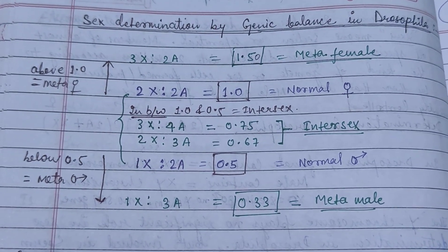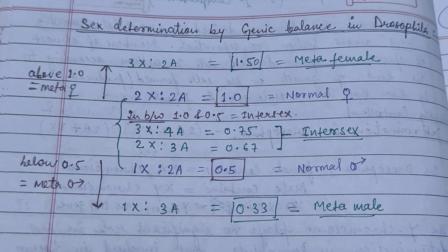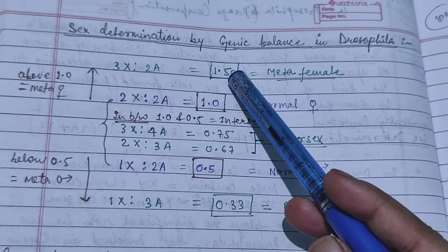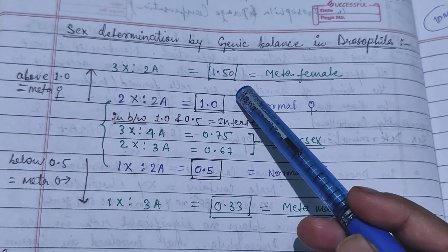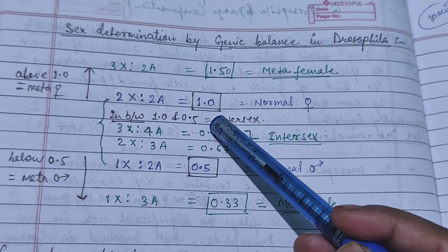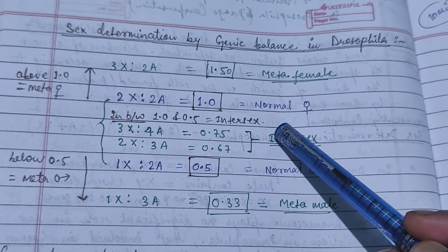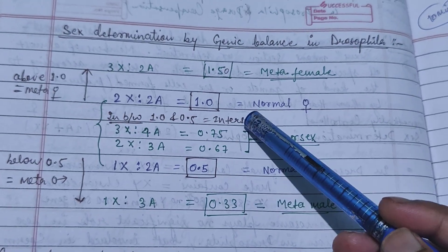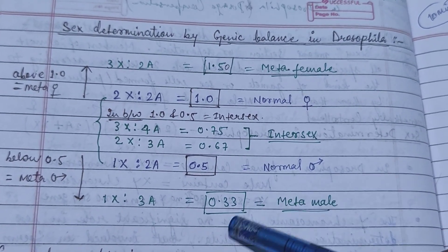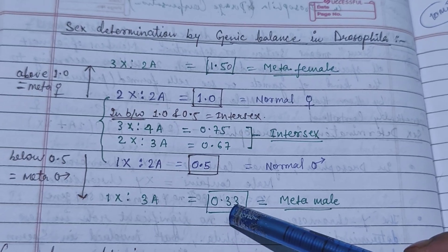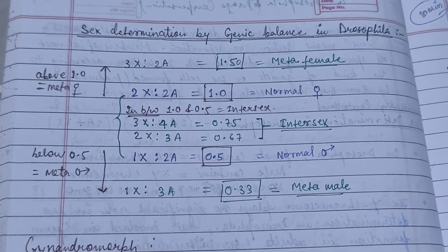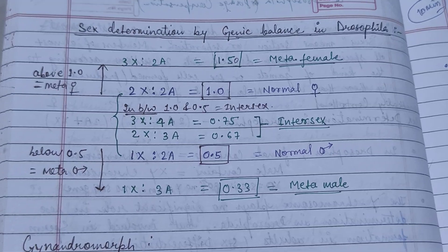If the X:A ratio is 1.5, that is a metafemale. If the ratio is 1, it is a normal female. In between 1 and 0.5, it is called an intersex. If it is 0.33, that is a metamale. So this is the ratio of the X chromosome to the autosome.